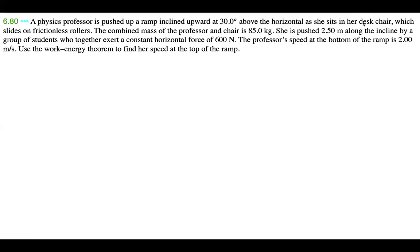A physics professor is pushed up a ramp inclined upward at 30.0 degrees above the horizontal as she sits on her desk chair, which slides on frictionless rollers. The combined mass of the professor and the chair is 85.0 kilograms. She is pushed 2.50 meters along the incline by a group of students who exert a constant horizontal force of 600 newtons. The professor's speed at the bottom of the ramp is 2.00 meters per second. Use the work-energy theorem to find her speed at the top of the ramp.